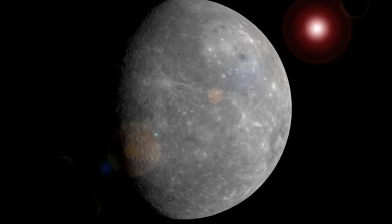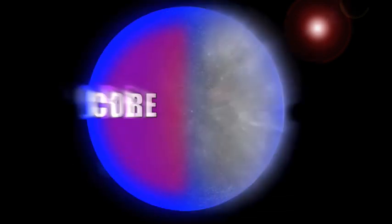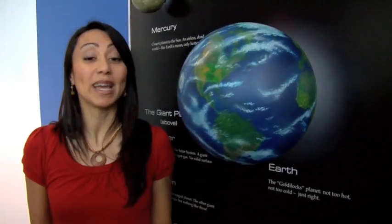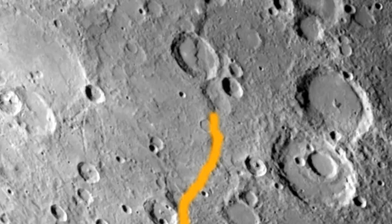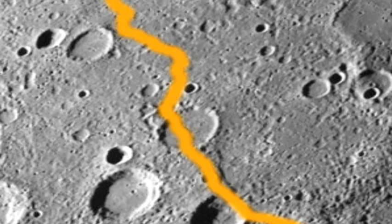We've also seen a lot of shrinkage of the planet, so we know the planet's been cooling, so we do believe it has some sort of core. Volcanism and shrinkage make it similar to Earth. Evidence of shrinkage can be seen in photos from MESSENGER showing clips on Mercury's surface.